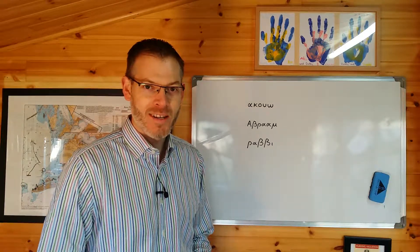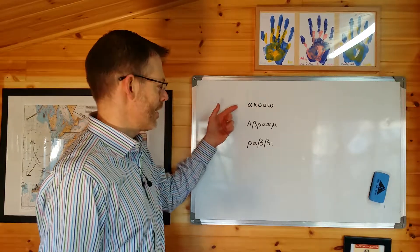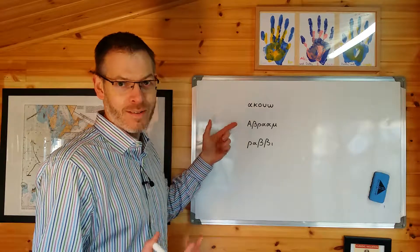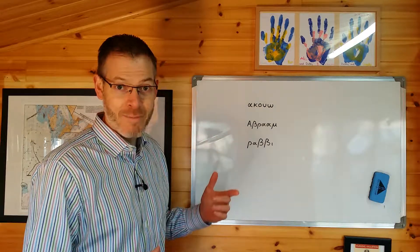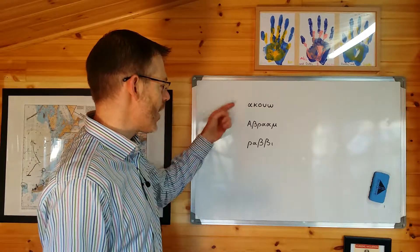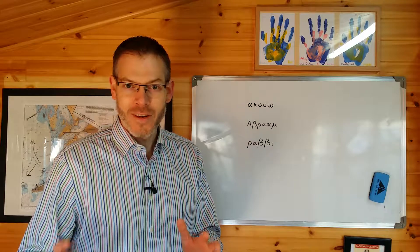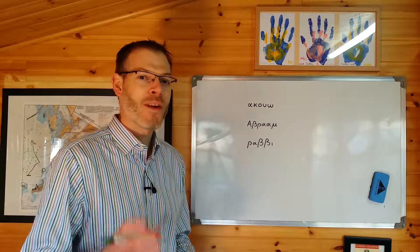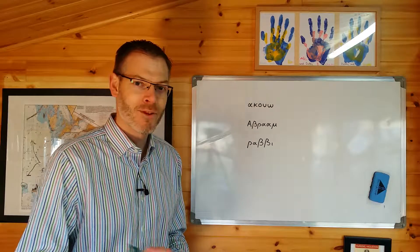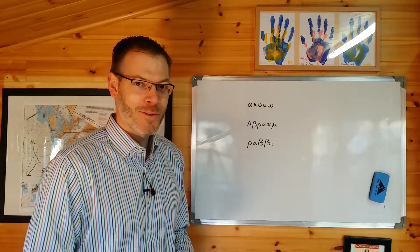I want you to see if you can spot what it is. Here's the question — look at these three words. Akuo means 'I hear'. Abraham — that's a proper name, it means Abraham. And Rabbi means 'teacher'. Which of these needs a breathing? You're not sure necessarily which sort of breathing it needs, but which of these needs a breathing? All of them? Just one or two? Pause the video, take a look, and try and work out what you think.